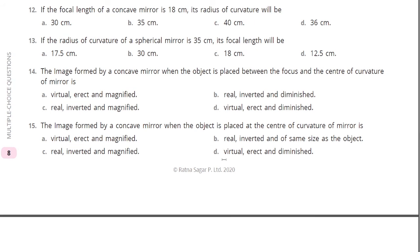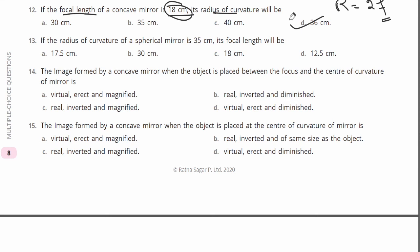Question number twelve: if the focal length of a concave mirror is 18, what is the radius of curvature? The radius of curvature is two times the focal length. So if the focal length is 17.5, radius of curvature is 35. Conversely, if the radius of curvature is 35, then focal length equals 35 divided by 2, which is 17.5.